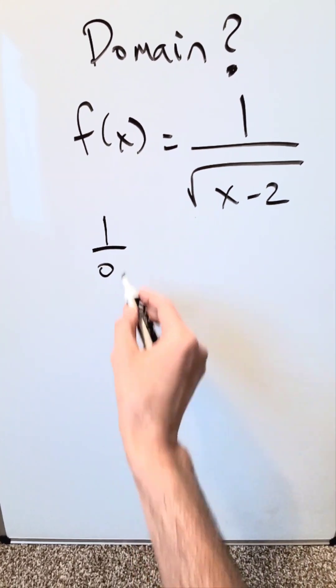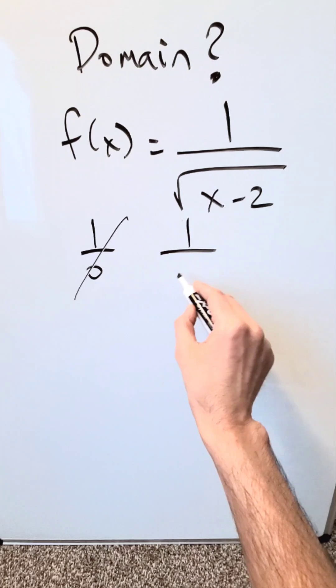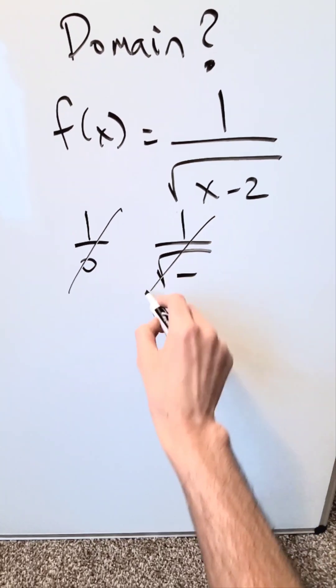You want to avoid 1 over 0, and you also want to avoid 1 divided by square root of a negative number. We don't want to see that.